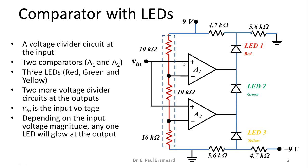At the input of this three-level comparator, there is a voltage divider circuit. The voltage divider circuit is formed of three resistors — 10kΩ, 10kΩ, and 10kΩ — through a 9V source. This is the voltage divider circuit at the input side of the three-level comparator circuit.